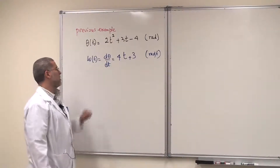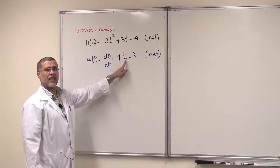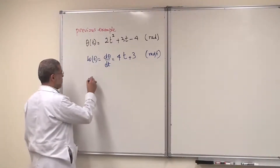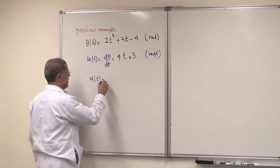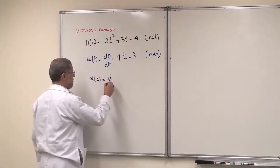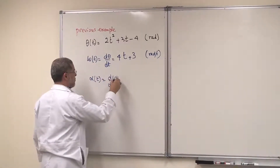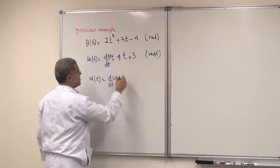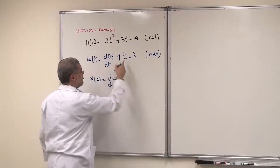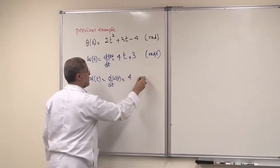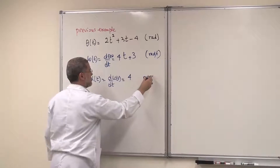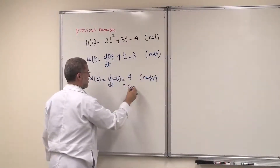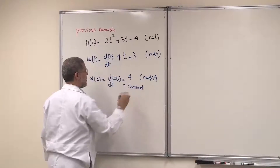You can see the angular position increases with time. Then you calculate the angular acceleration α, which is the time derivative of the angular velocity. Differentiating ω(t) = 4t + 3 gives α = 4 radians per second squared, which is a constant.